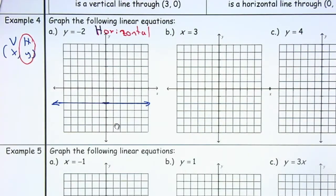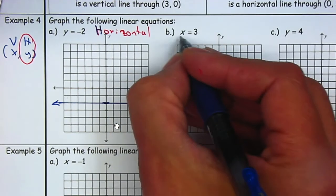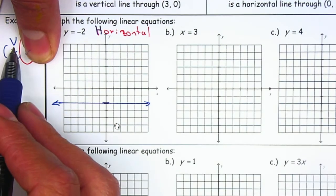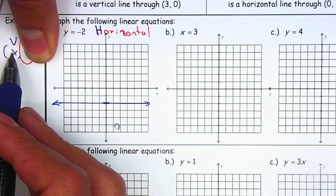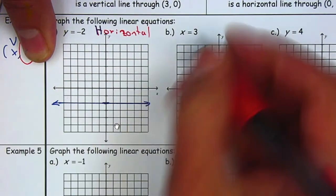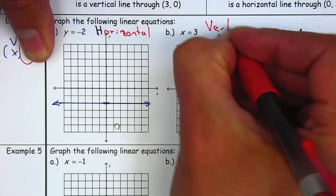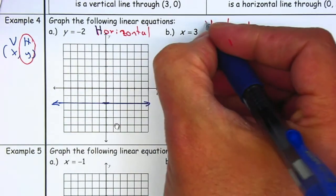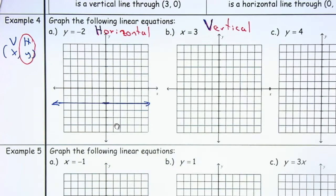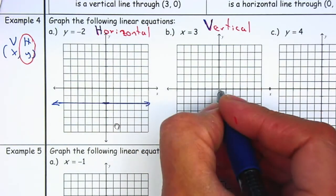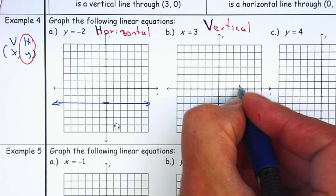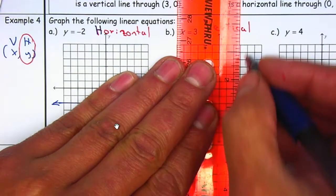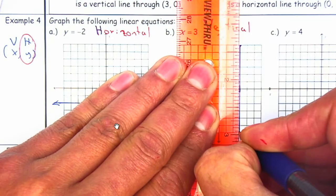And that will be your line. X is equal to a number — so x is equal to 3 will be a vertical line. Let's write down the word vertical. It has to cross the x-axis at 3 — 1, 2, 3 — and then just make a full line. You can use your ID to make straight lines.